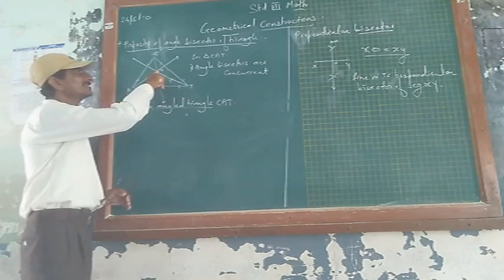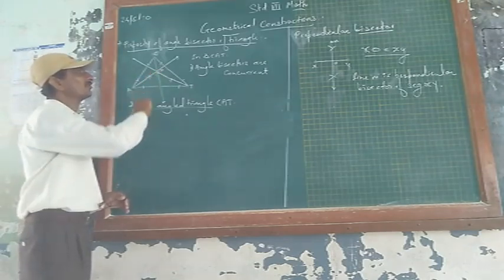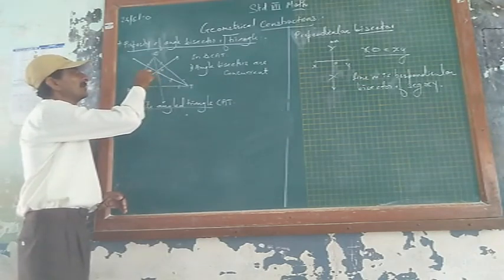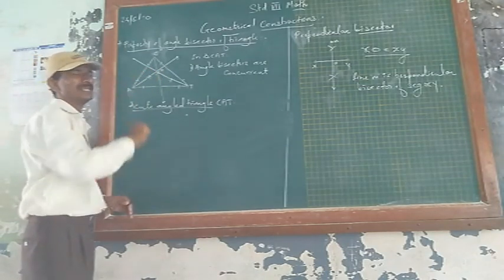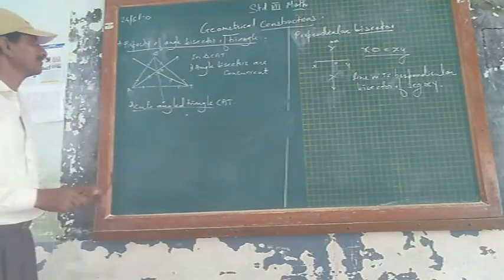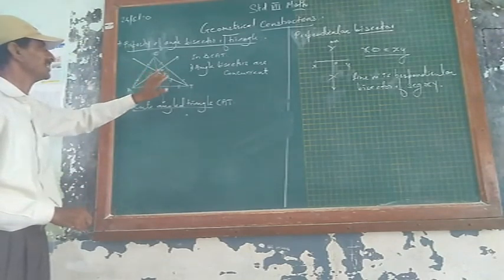Then, consider this as center, then draw perpendicular on each side. Draw perpendicular from this point to each side with the help of set square. We can do it with the help of set square. Draw perpendicular here.